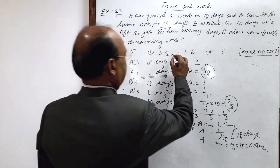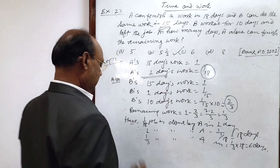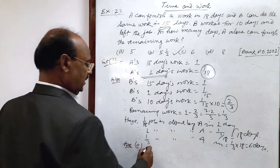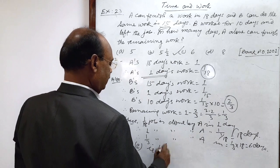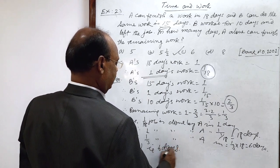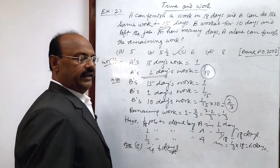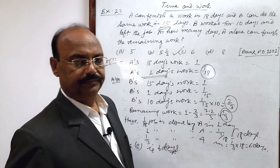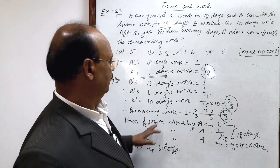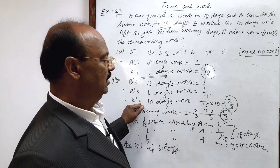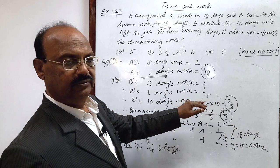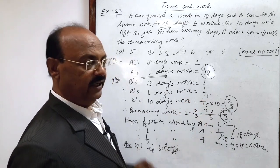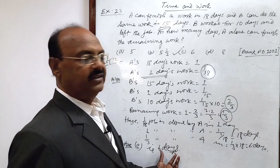So this is the answer. Answer is C, means that A can complete the remaining work which has been left by B after doing 10 days work. This remaining work can be completed by A in how many days? 6 days.